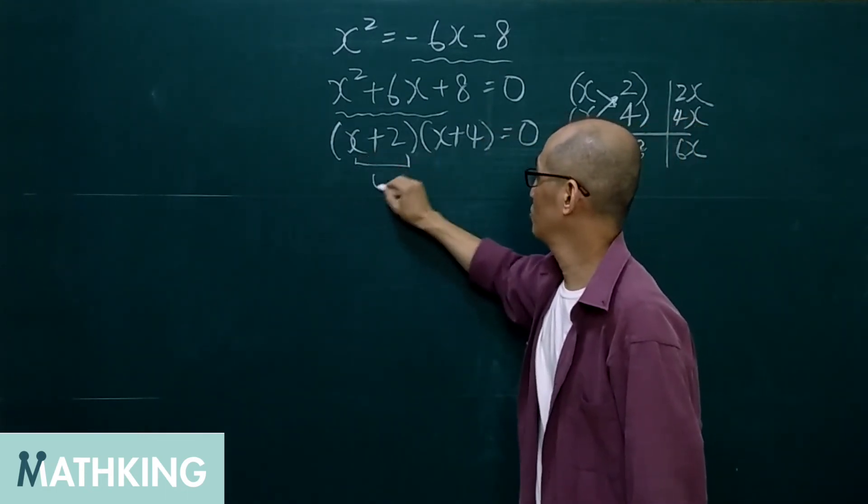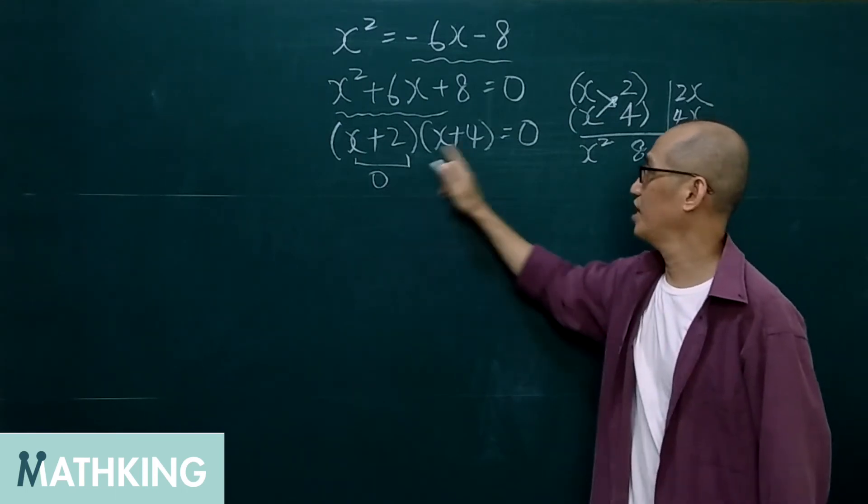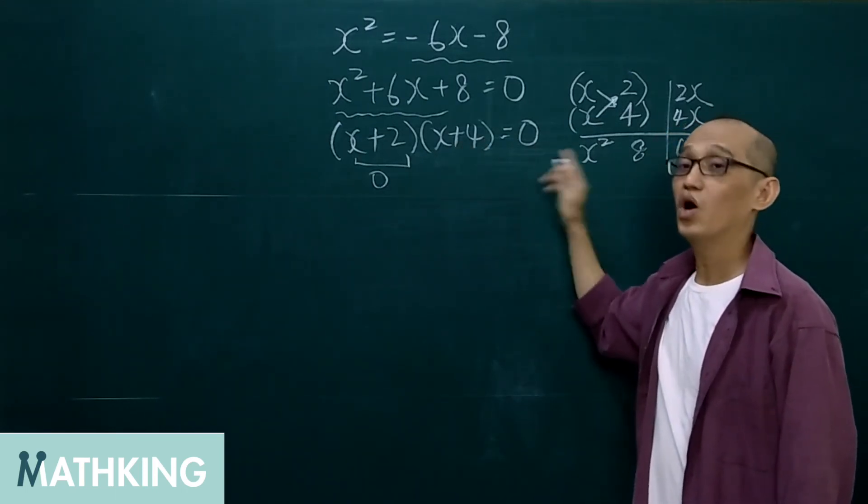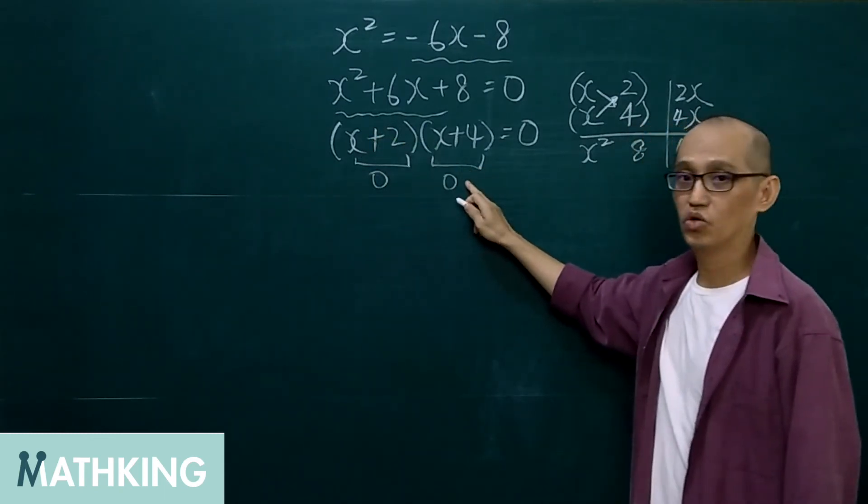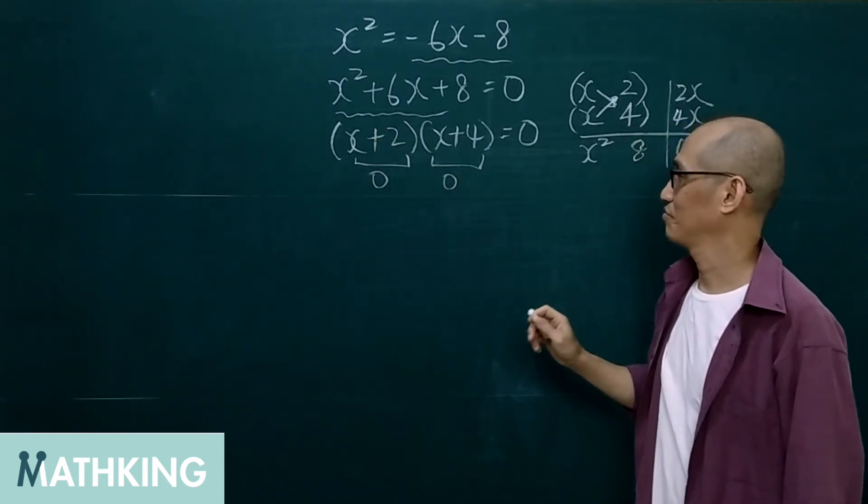If this one is 0, then 0 times this, we get 0. Or, if this one is 0, then this one times 0, we get 0.